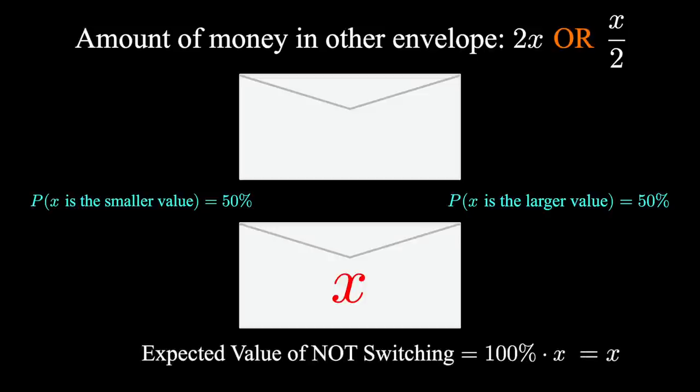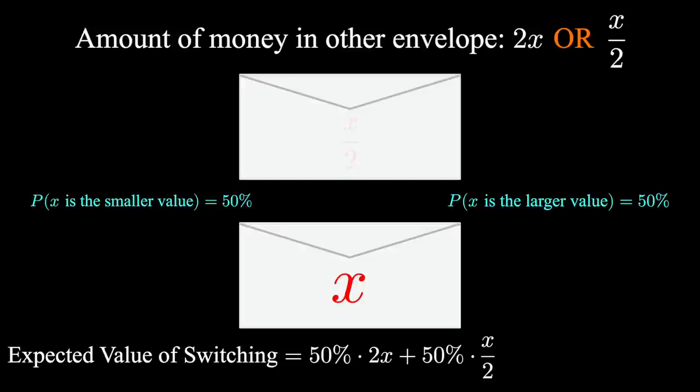If we do switch, there's a 50% chance we get 2x and a 50% chance we get x over 2. We calculate the expected value by multiplying the probabilities by the value and adding. 0.5 times 2x plus 0.5 times x over 2. Simplifying these fractions gives us 5 fourths times x or 1.25x.